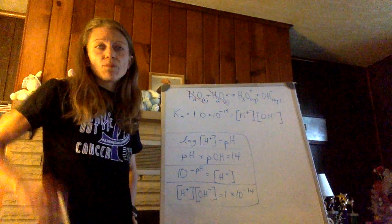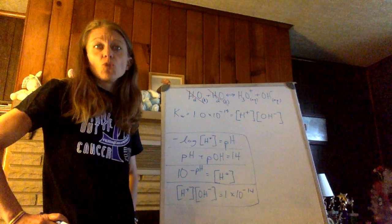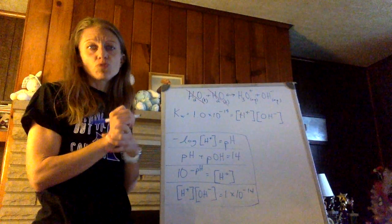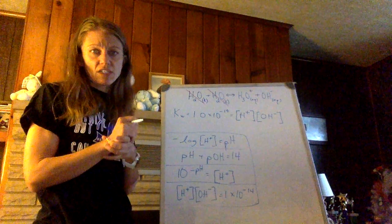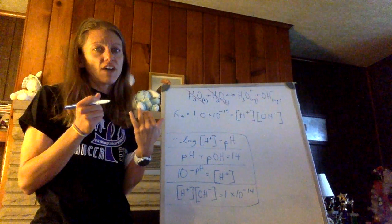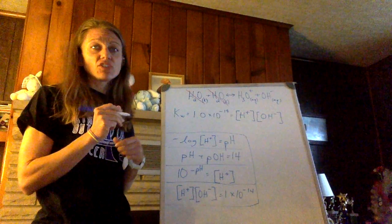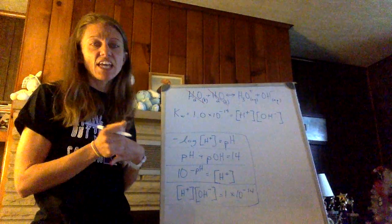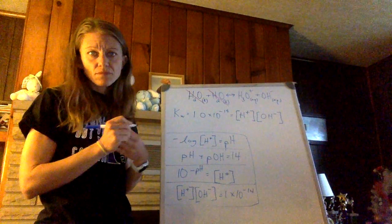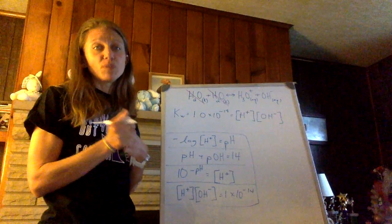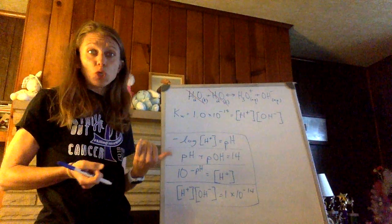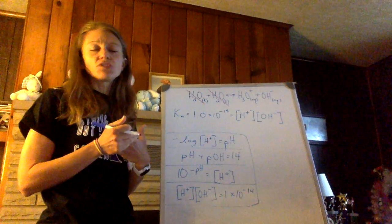So the pH scale comes from that. With below 7 acidic, above 7 basic, 7 is neutral. Calculating pH is the big focus here. pH is the negative log of the concentration of hydrogen ions. Enter it in your calculator. pOH is something we don't hear much about, but you can do the same thing. Get your concentration of OH-, negative log of that. pH plus pOH will always be 14. All I'm giving you here with the pH scale is math fun.